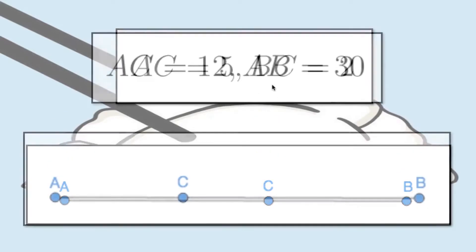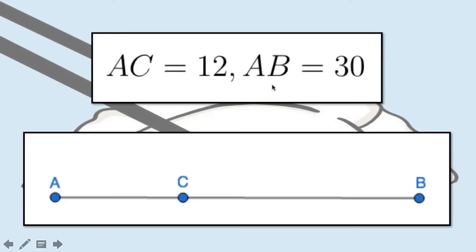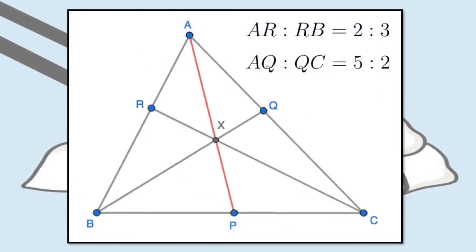Applying these two concepts, let us go to the most used figure in geometry problems: the triangle. There are a lot of segments in a triangle, and we can use mass point geometry to balance each one of them. Since we can convert ratios to masses and masses back to ratios, let us start with this item.